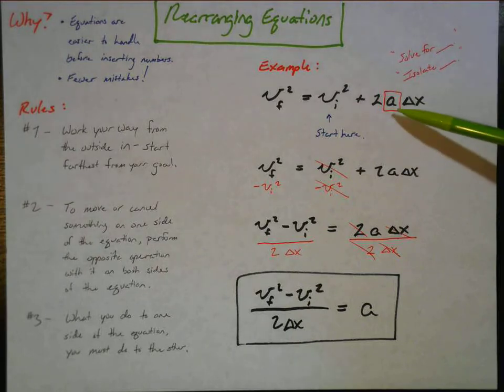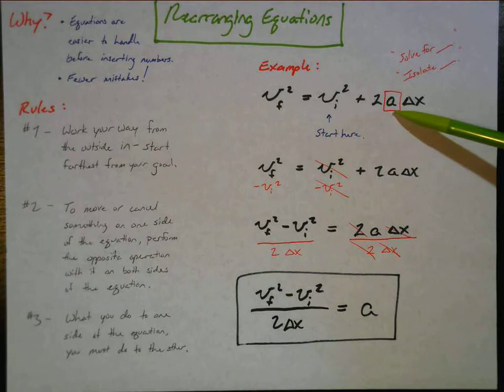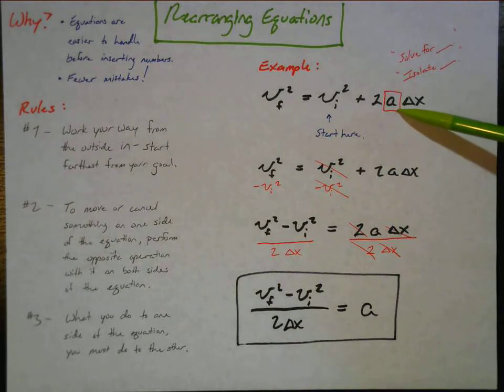I'll say oh why don't you just isolate initial velocity or why don't you solve for acceleration. And that's actually what we're going to do here. We're going to solve for acceleration, and that basically means we're going to isolate it on one side of the equal sign, or you can think of it as just rearranging the equation in order to get this all by itself.